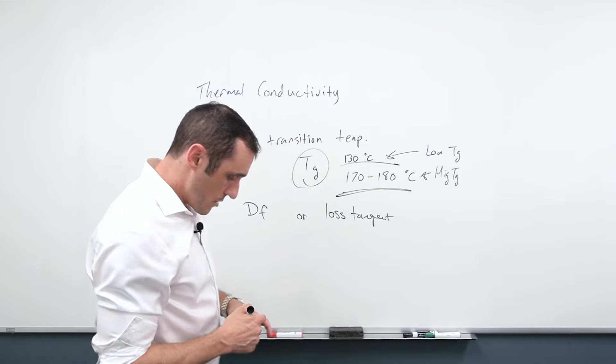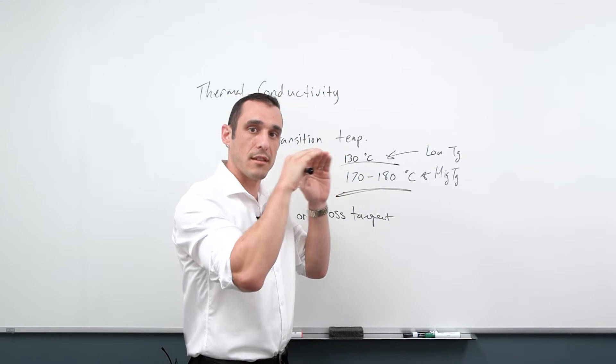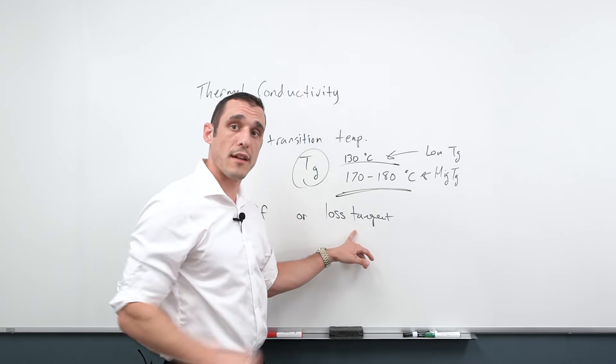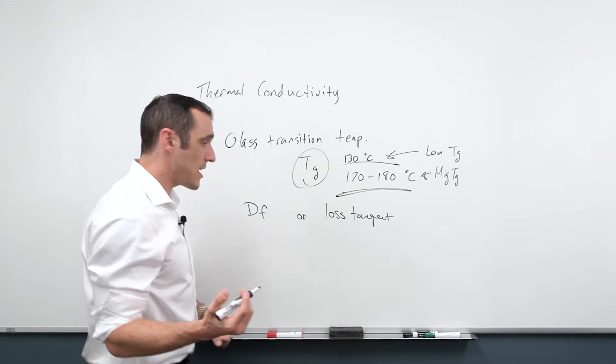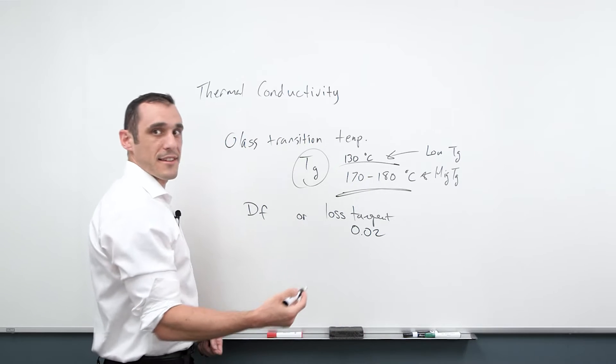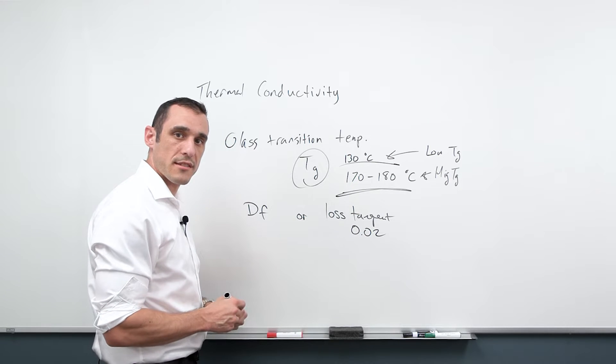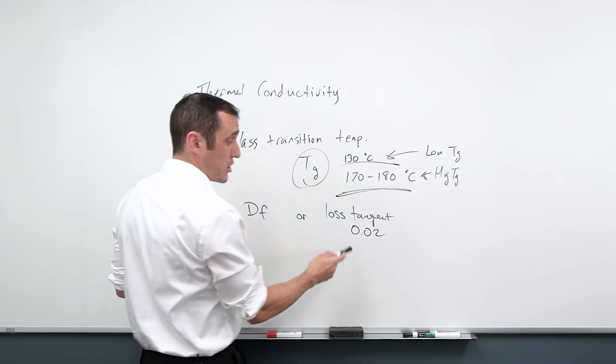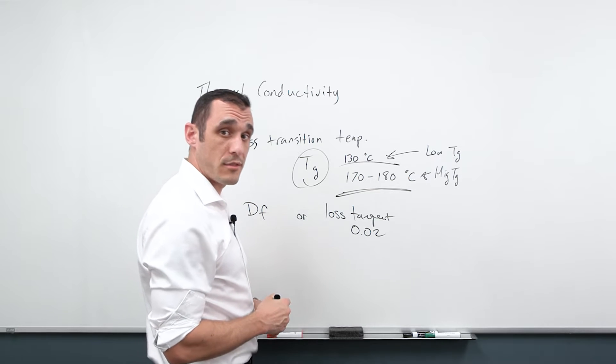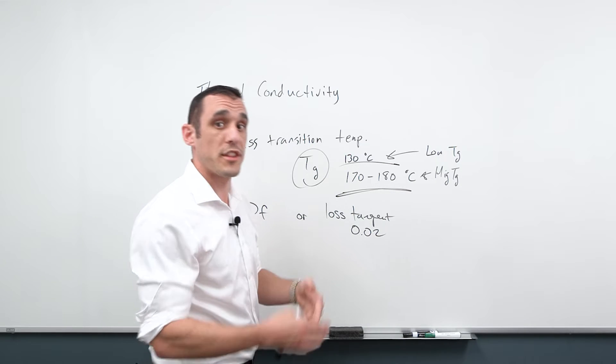Loss tangent essentially tells you how the signal level in a board, when the signal is traveling dies out as it moves through the board. So this is a measure of how signal loss occurs in signals that are traveling through your board. Loss tangent values typical for FR4 0.02. And you don't necessarily need to calculate this unless you're working in really long links. But in another video, what I'll do is I'll actually go over how to use this value to calculate what the expected loss is in your signal level as a signal transitions through a board.